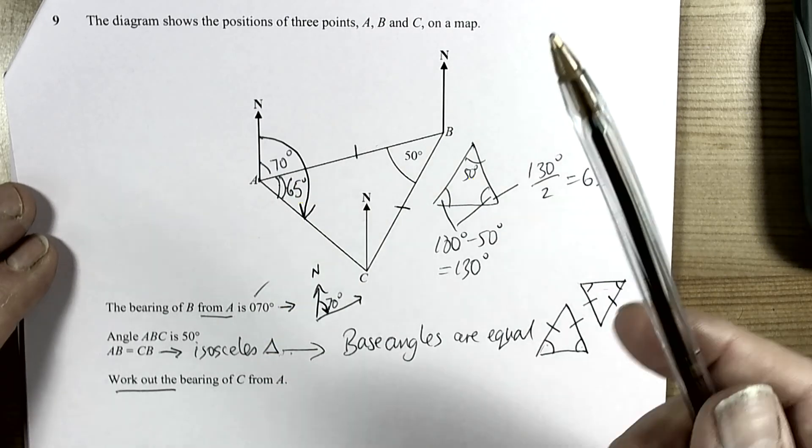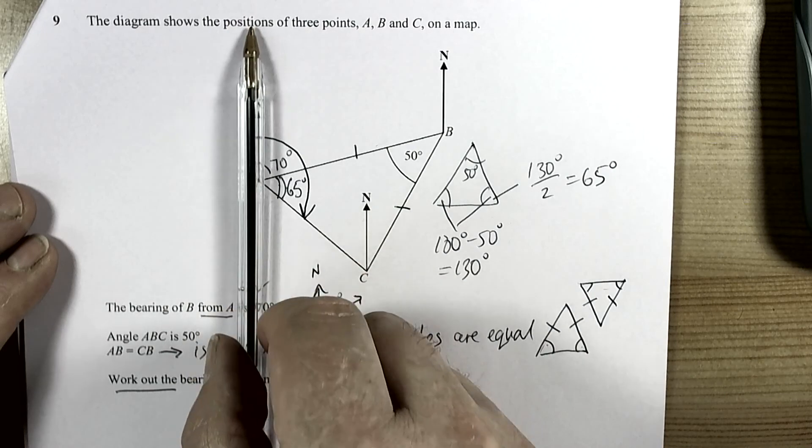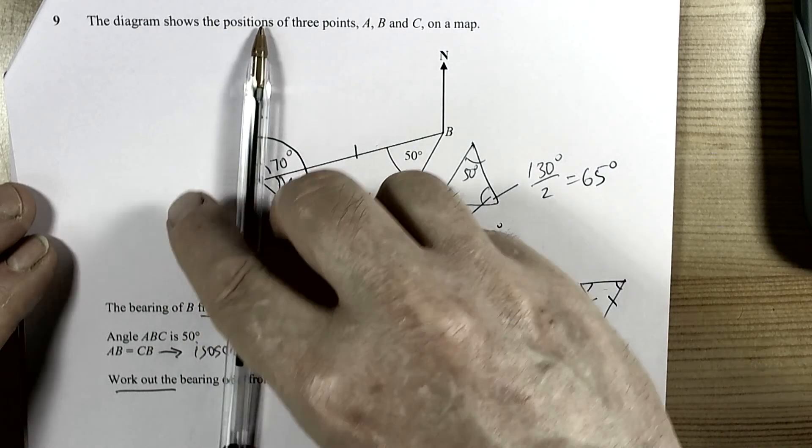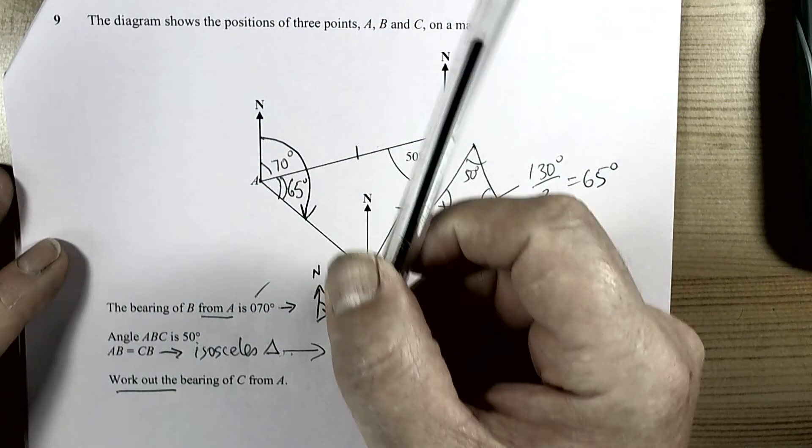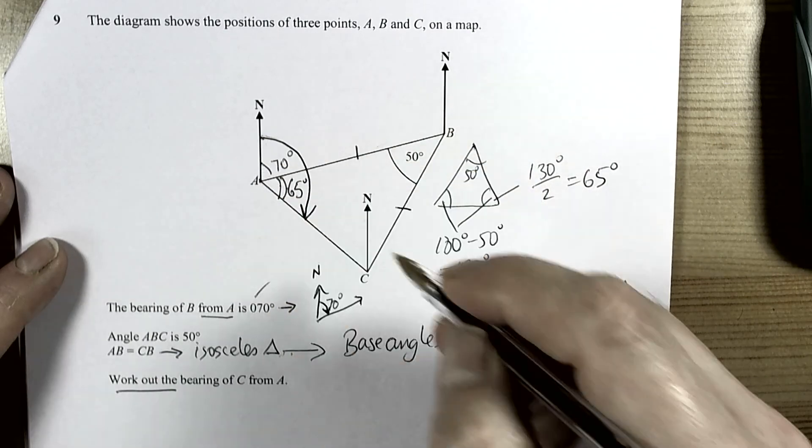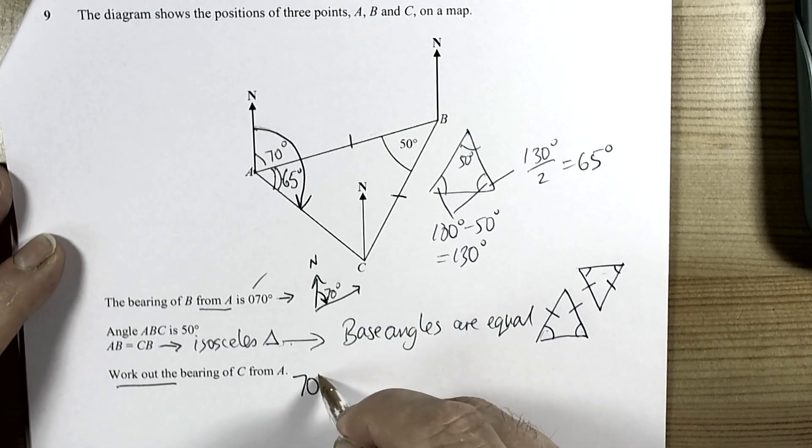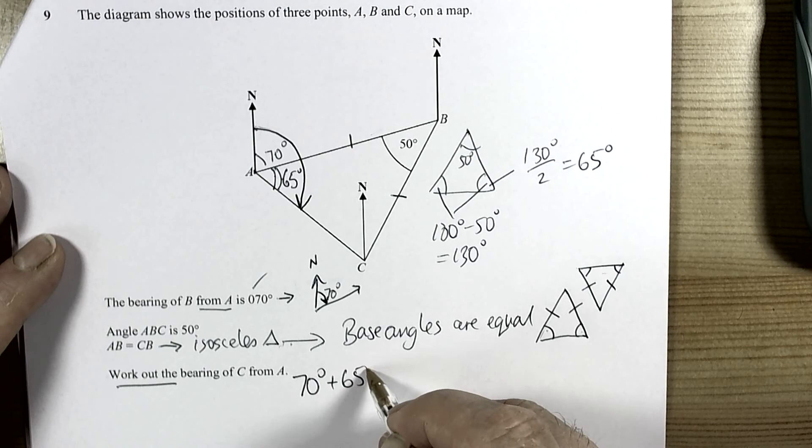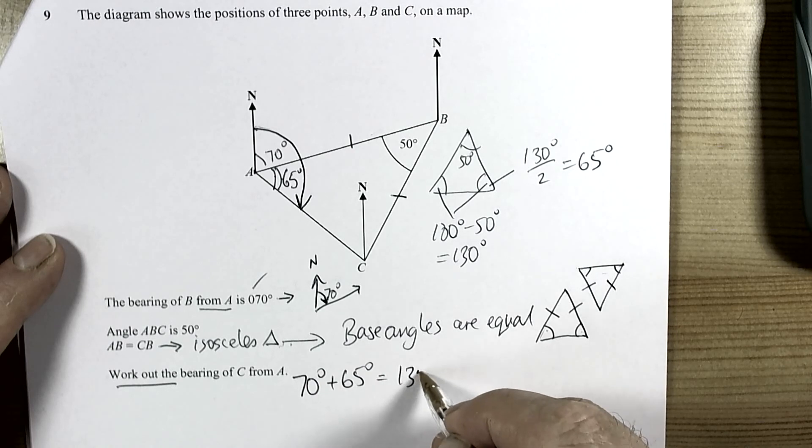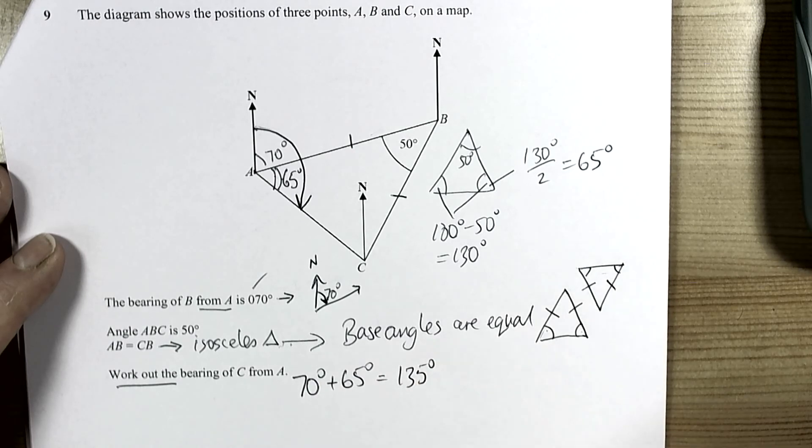Now as the bearing is the angle turned from north to face the direction you want then we've turned a whole 70 plus 65 degrees. So here we need to show 70 plus 65 degrees which equals 135 degrees and that would be the answer there.